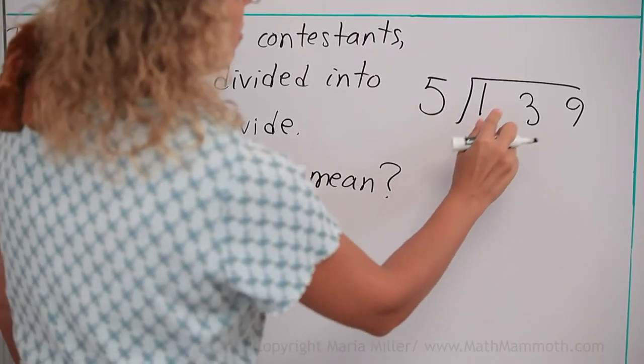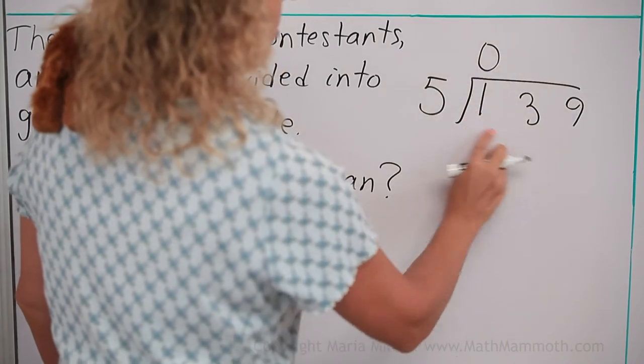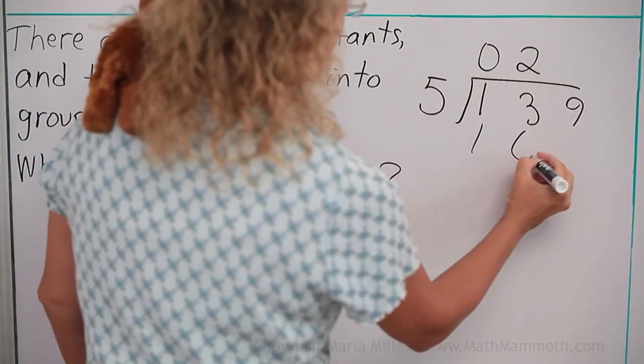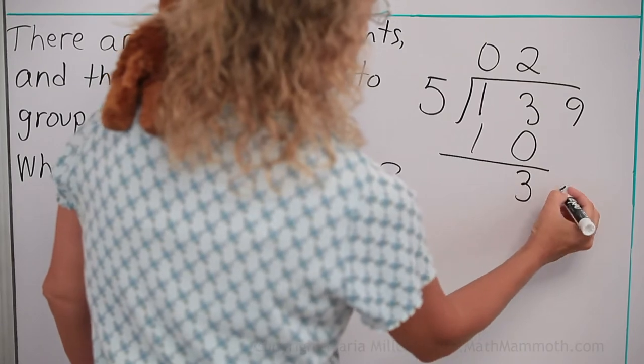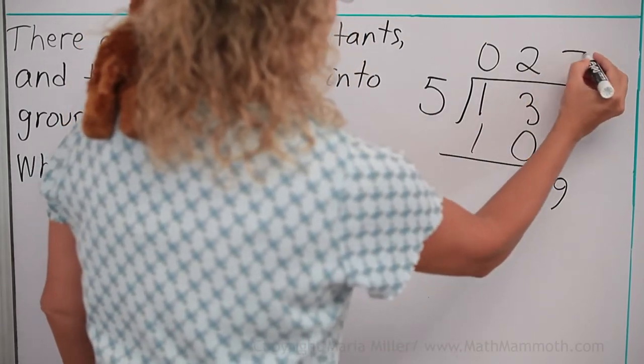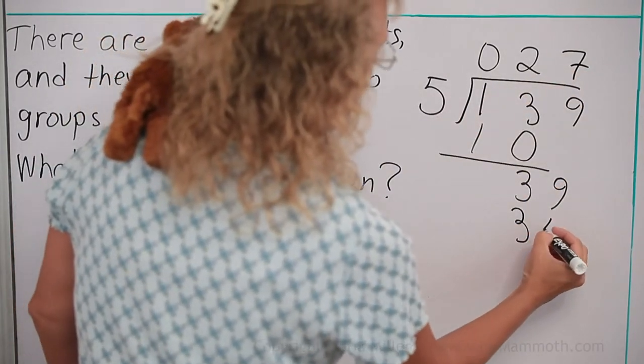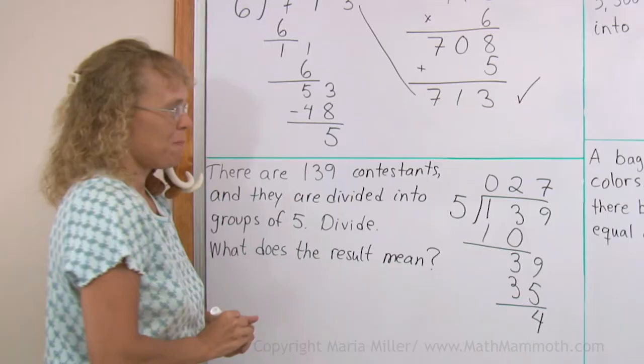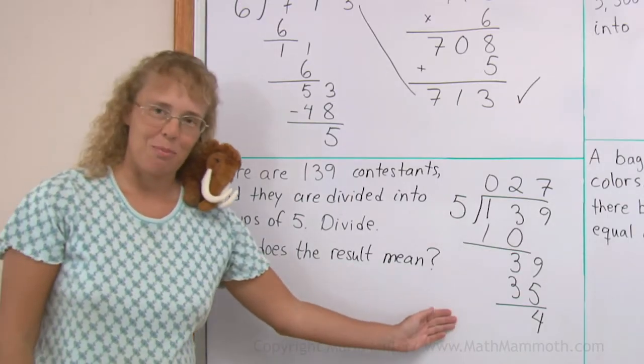139 divided by 5. 5 goes to 1, 0 times, and into 13, 2 times. We get 39, and it goes 7 times. And subtract, and 4. So what does this answer mean now?